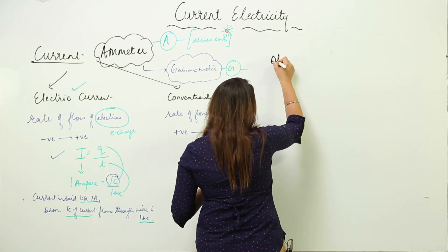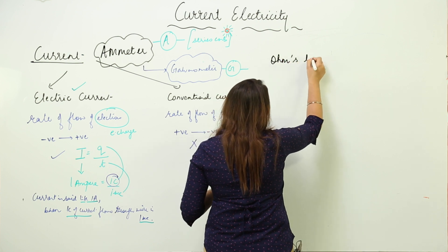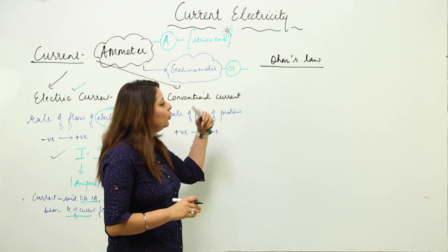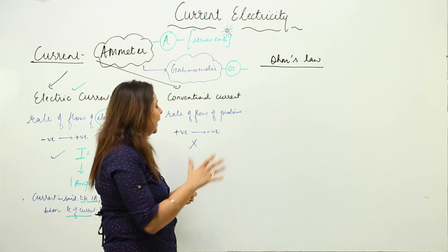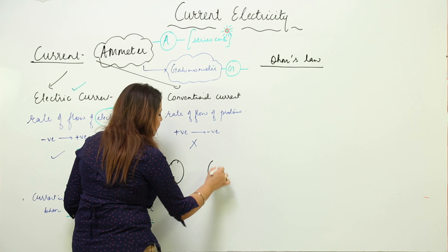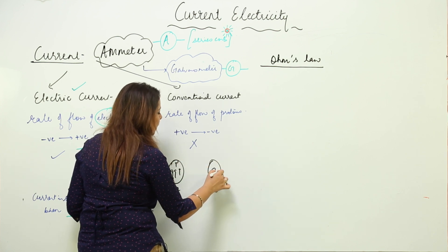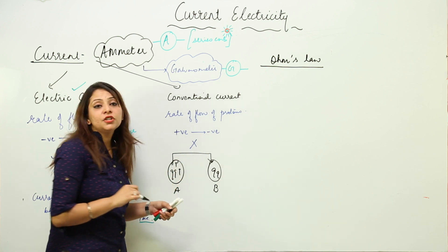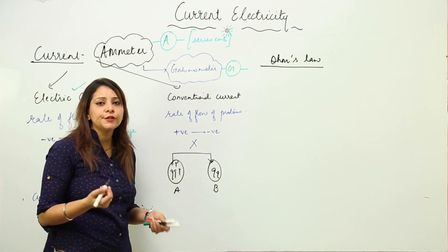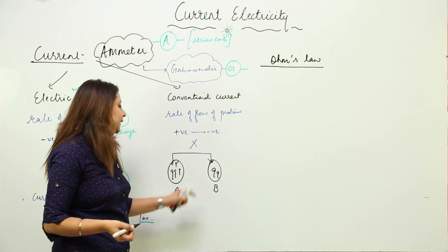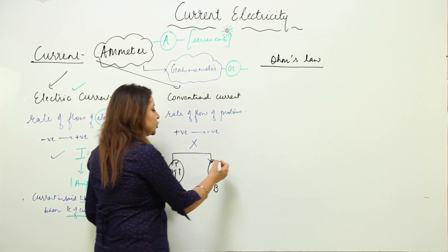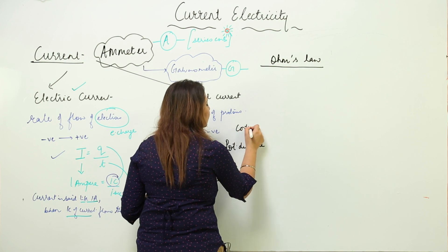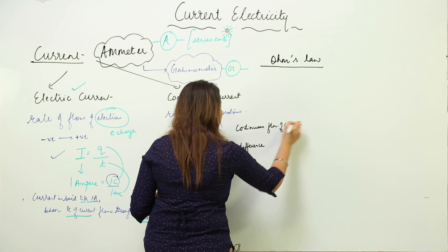There is a law formulated by a famous scientist — that is Ohm's law. Before we go to that law, consider: if there is body A with many electrons and body B with comparatively fewer electrons, charge flows from A to B. If we want the charge to continuously flow, we need a difference in the number of electrons — and that is the potential difference.